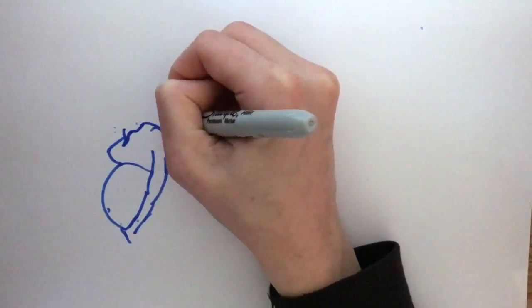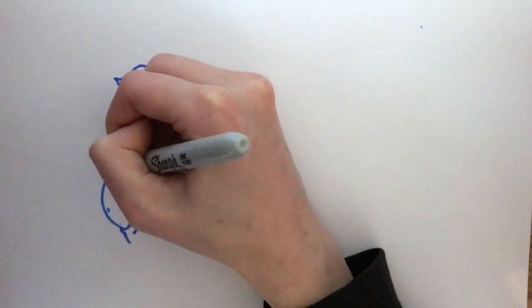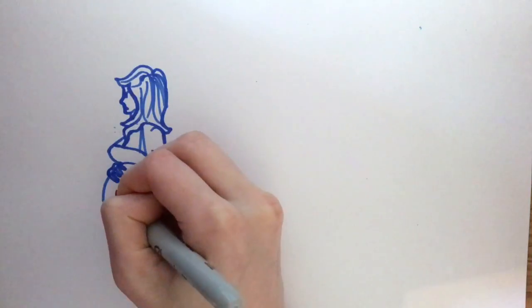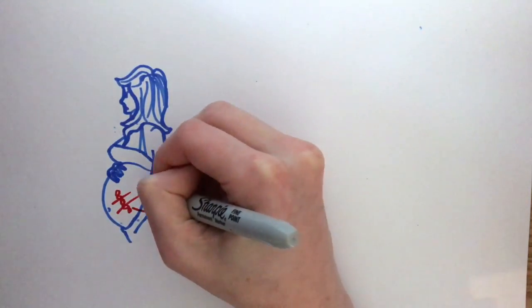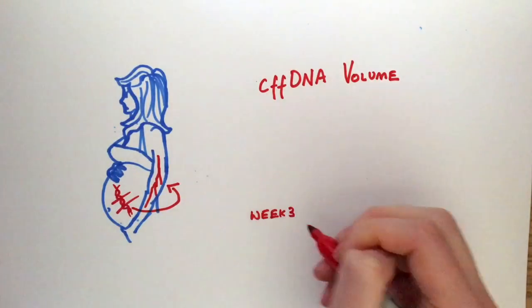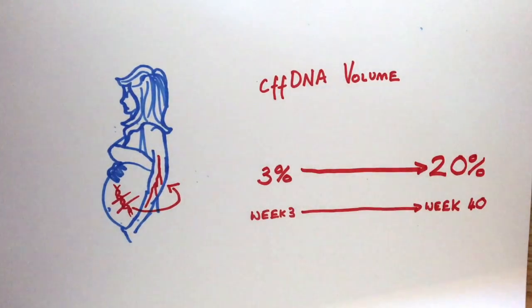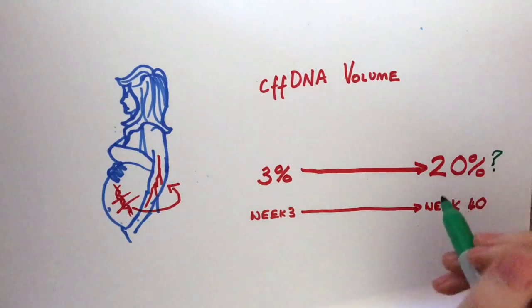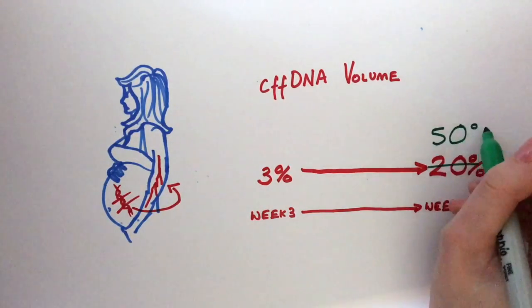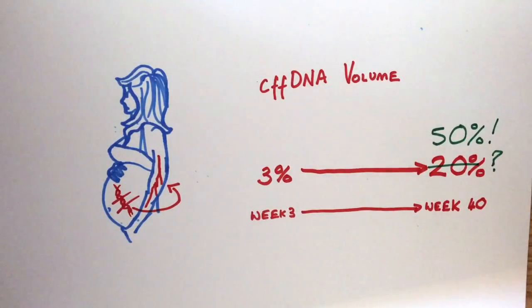So where does cell-free fetal DNA come from? Well, in the pregnant woman, a little bit of fetal DNA that is chopped up starts circulating in the mother's plasma. CFF DNA volume varies according to how far along in the pregnancy the woman is and ranges from 3 to 20%, increasing as the pregnancy goes on. There are some samples, however, where you can see up to 50% of the mother's CF DNA is of fetal origin.